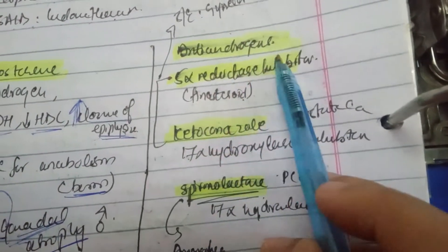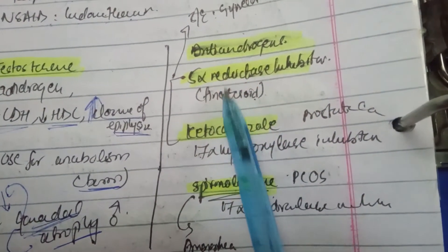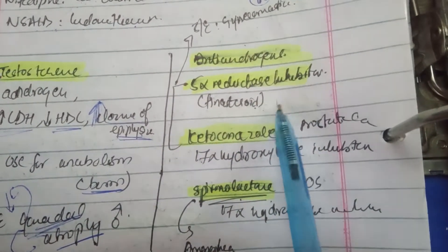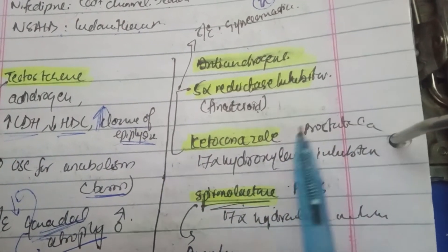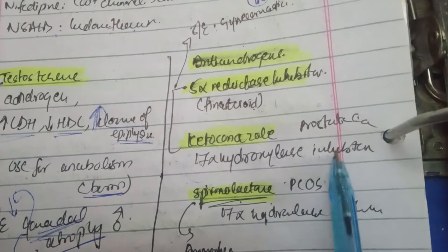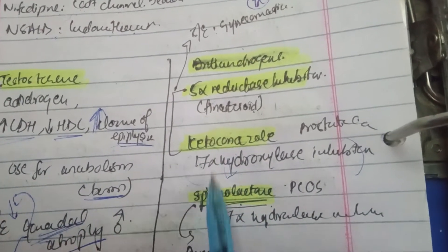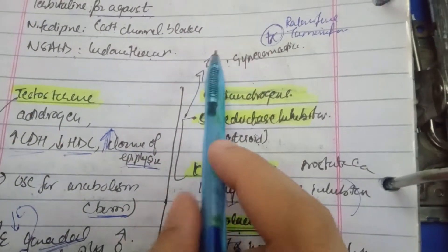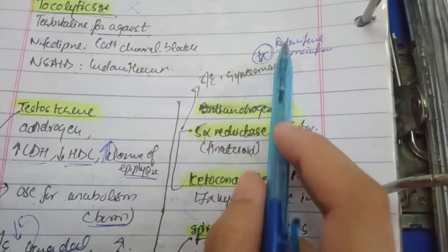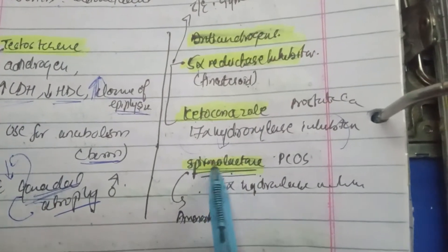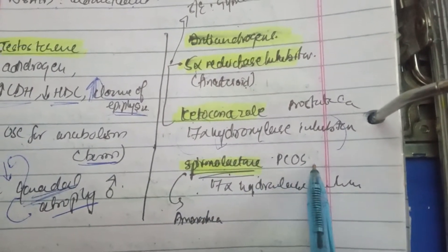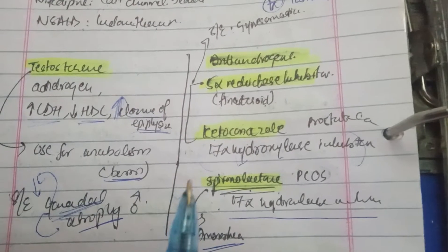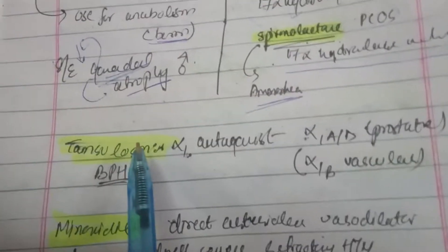Anti-androgens include: finasteride — a 5-alpha reductase inhibitor that stops conversion of testosterone to its active form DHT. Ketoconazole — a 17-alpha hydroxylase inhibitor used in prostate cancer that decreases androgen formation. Both drugs have gynecomastia as a side effect, which can be treated with raloxifen or tamoxifen since both act as antagonists at the breast. Spironolactone is also a 17-alpha hydroxylase inhibitor used in PCOS and may cause amenorrhea.